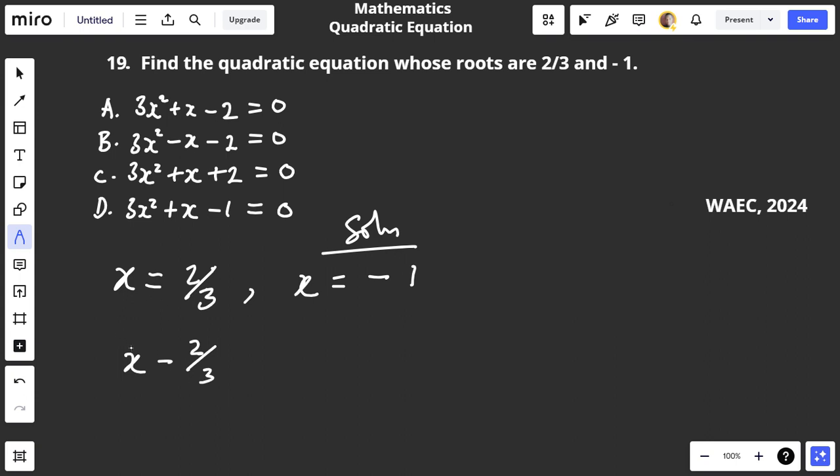Let's continue. If you multiply by 3, you have 3x - 2 = 0.